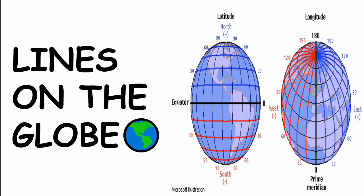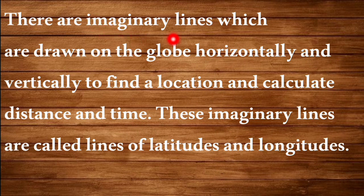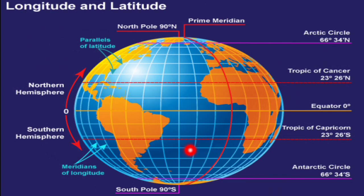Latitudes and longitudes are imaginary lines drawn on the globe horizontally and vertically to find location and calculate distance and time. Horizontal lines are called latitudes and vertical lines are called longitudes. Important latitudes include the equator, Tropic of Cancer, Tropic of Capricorn, Arctic Circle and Antarctic Circle. The important longitude is the Prime Meridian.